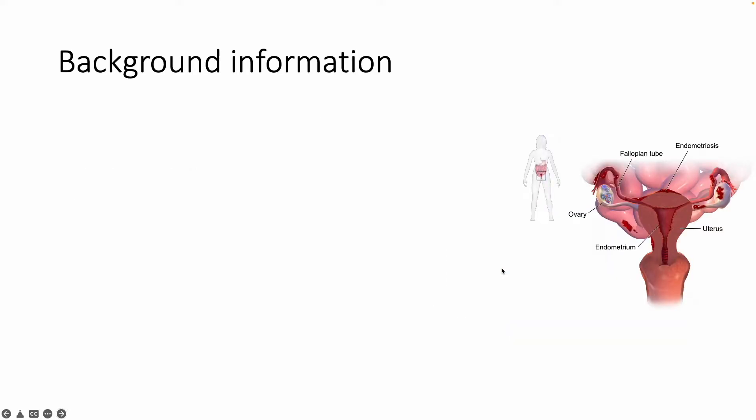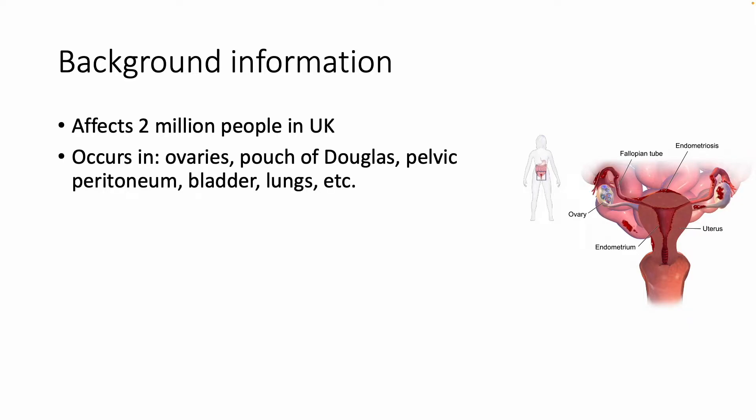It affects roughly 2 million people in the UK, and it can spread to other parts of the body such as the ovaries, the Pouch of Douglas, the pelvic peritoneum, the bladder, lungs, etc.